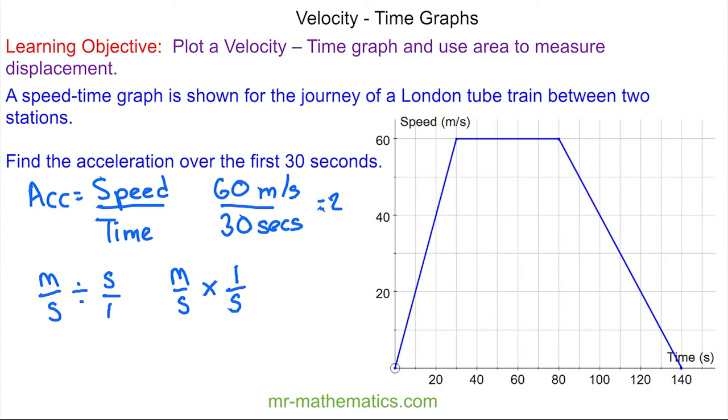We can work this out as meters times 1, which is meters, and seconds times seconds, which is seconds squared. So our acceleration is 2 meters per second squared. This means that every second it is increasing by 2 meters per second.